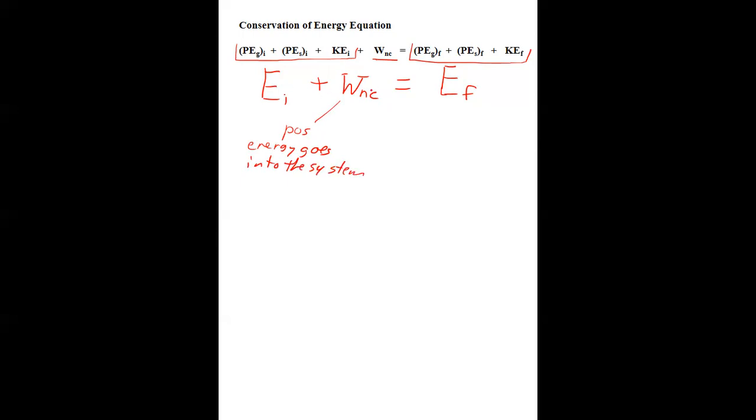So if we had 10 joules, and then the work was positive 5 joules, then the final energy would be 15 joules. Whereas, let's say the work was zero, that'd be 10 plus 0 equals 10. Energy is conserved in that case. The work could also be negative, which means energy leaves the system. So if we had 10 joules of energy, and then there was negative 5 joules of work done, then the final energy would be 5 joules.